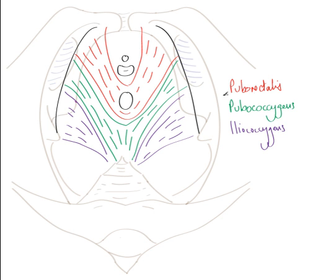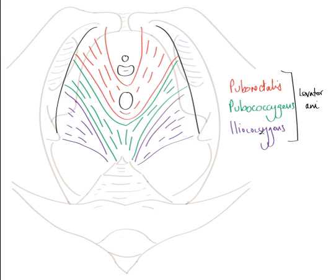These three muscles — puborectalis in red, pubococcygeus in green, and iliococcygeus in purple — are collectively known as levator ani. So levator ani consists of puborectalis, pubococcygeus, and iliococcygeus.